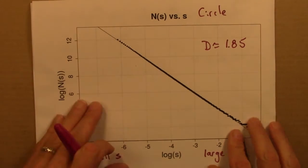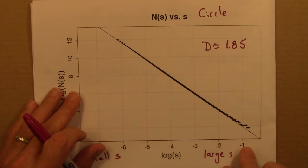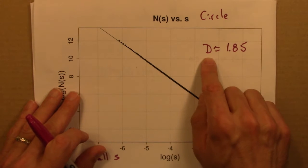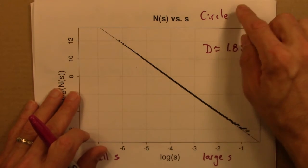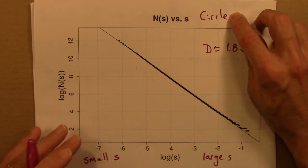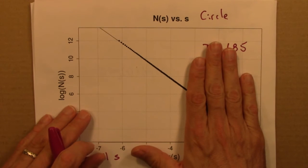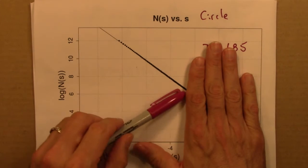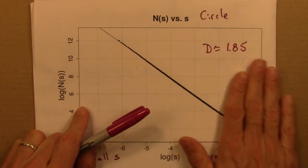However, if we just took all the data and did a linear fit to it using some fitting package, one would get a dimension of 1.85, which is pretty disappointing. We would expect a dimension of 2, a circle is two-dimensional. So what we want to do is ignore a bunch of this data. Again, because we're interested in the small s limit, so we're certainly justified in throwing out some of this data.